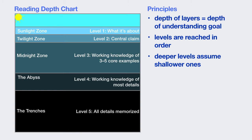If it's a textbook for a science or history course where you need to know a lot of dates, names, and figures, maybe level four is where you'll hang out. But if you're doing research for a paper, at first you'll want to gather a lot of sources and just do levels one and two to get a feel for what's out there. Then when you identify central passages, you can go to levels three and four. You can download a copy of the reading depth chart in the PDF handout provided.